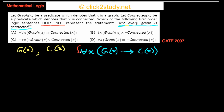We place the negation outside: not [for all X, G(x) → C(x)]. This is what we are looking for. Option A has exactly this form — 'not' applied to the whole universal statement — so Option A does represent the statement and is eliminated as a candidate for the answer.